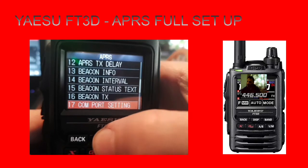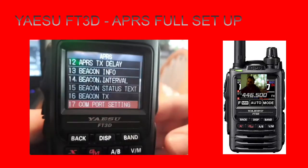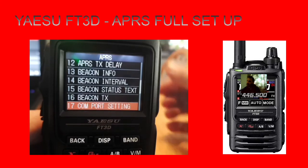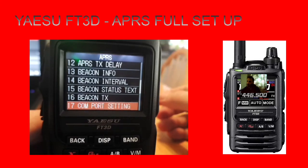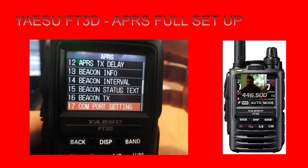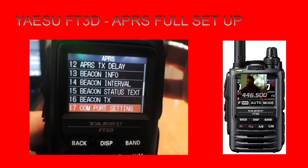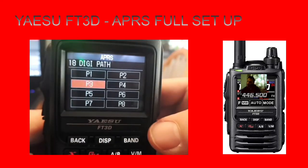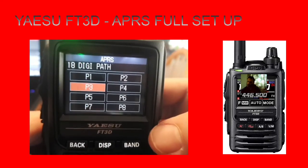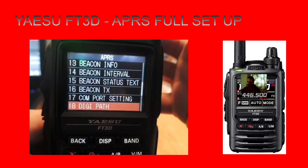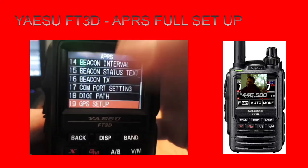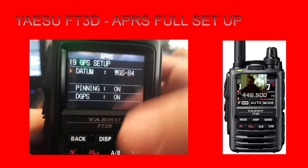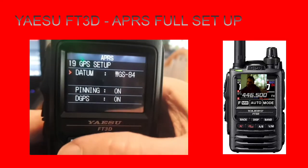Combo Setting - you can connect this to your computer, choose a combo, and interact with programs on your computer. Digi Path - I don't really know what that is but there it is. GPS Setup - that's the default setting, I just leave it as that.